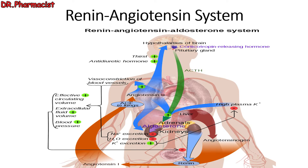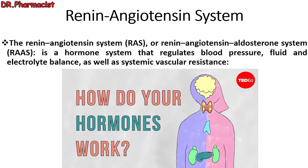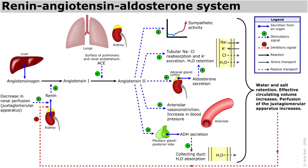Hello everybody. I want to talk about how the renin-angiotensin system works. The renin-angiotensin system, also called the renin-angiotensin-aldosterone system, is a hormone system that regulates blood pressure, fluid and electrolyte balance, as well as systemic vascular resistance.